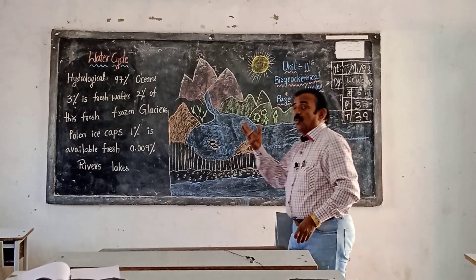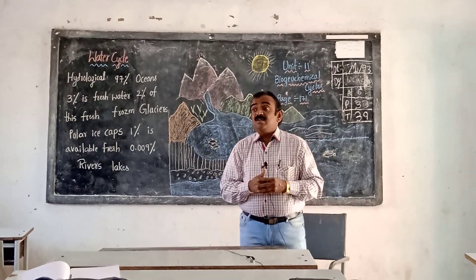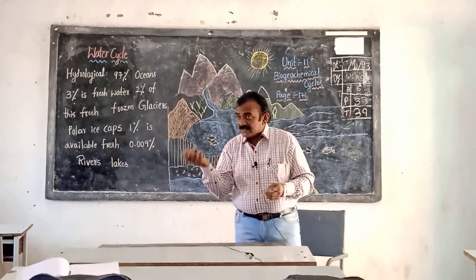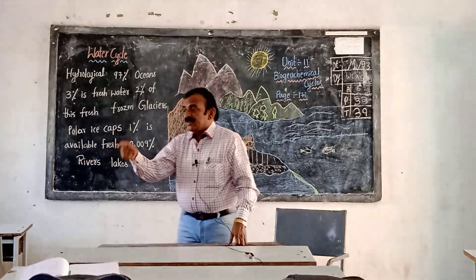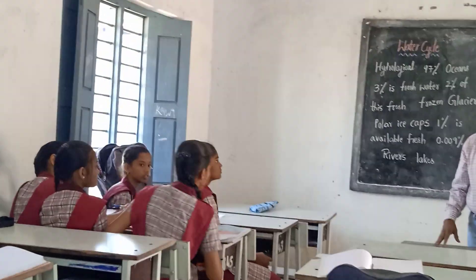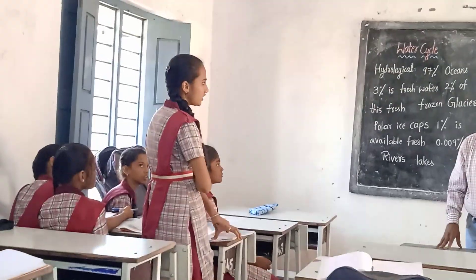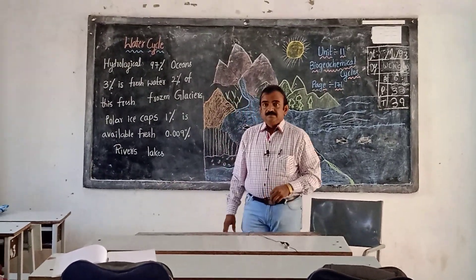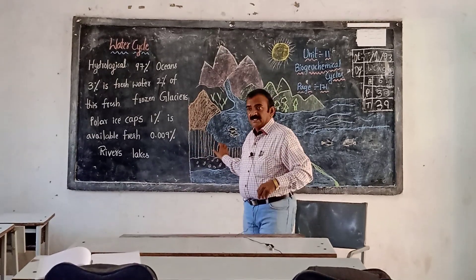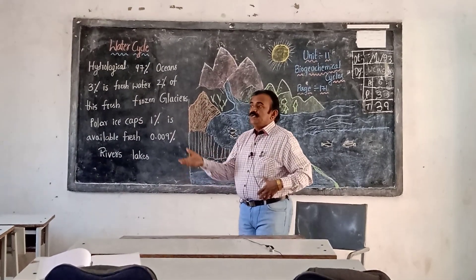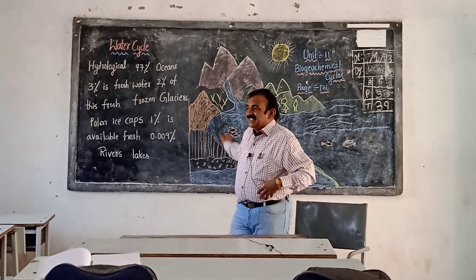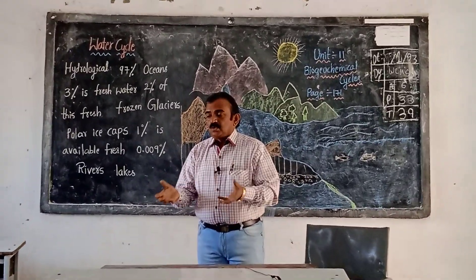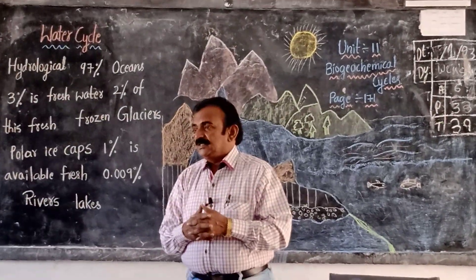Now I am telling you the correct phenomenon of how water is recycled - that is called the water cycle, also called the hydrological cycle. Water is present in oceans, rivers, and lakes. The sun heats the water, water heats up, and there are many plants on the Earth. Through leaves, evaporation of water takes place - that is called transpiration.